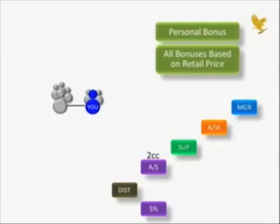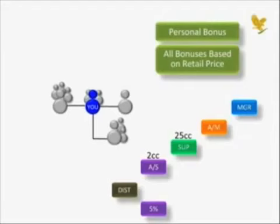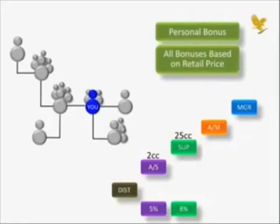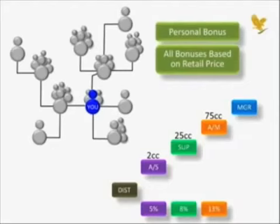As you teach the distributors in your network to do as you have done, they will sponsor new distributors and your network grows. When you and your group accumulate 25 case credits in two consecutive months or less, you are automatically advanced to the level of Supervisor and receive an 8% bonus on all your personal and retail volume generated thereafter. The duplication process naturally repeats itself — your network grows and the volume increases. When your group generates 75 case credits within a two consecutive month period, you advance to Assistant Manager, and your bonus on personal and retail volume increases to 13%. When the volume accumulates to 120 case credits within two consecutive months, you become a Manager and start earning an 18% bonus on your personal and retail volume.